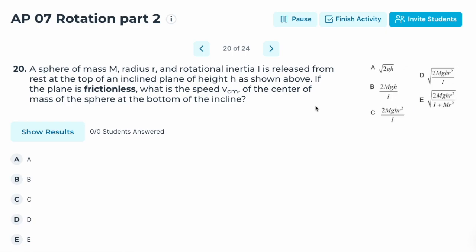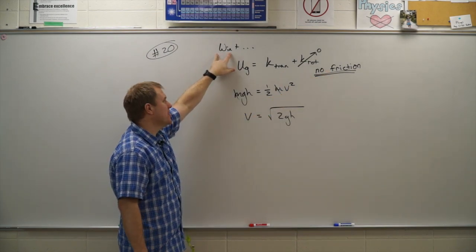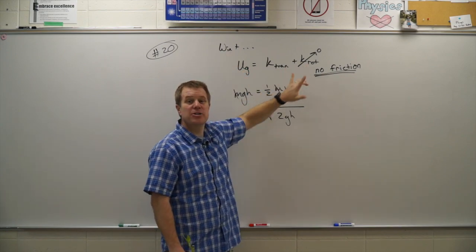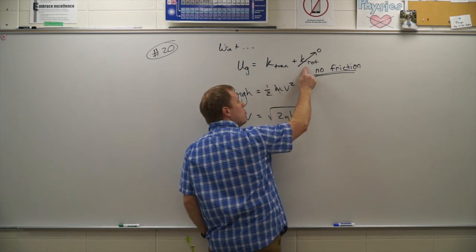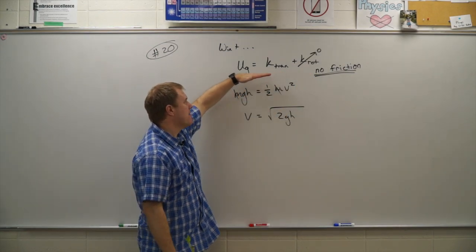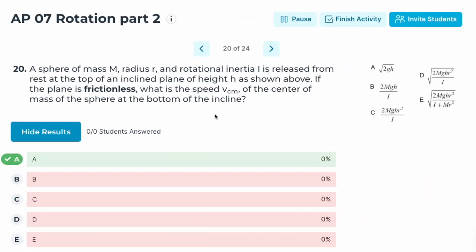Number twenty: a sphere of mass m, radius r, and rotational inertia I is released from rest at the top of an inclined plane of height h. If the plane is frictionless, what is the speed of the center of mass at the bottom? Key point: no friction means it will not rotate, so there is no rotational kinetic energy. Setting mgh = ½mv² and solving gives v = √(2gh). Correct answer: A.